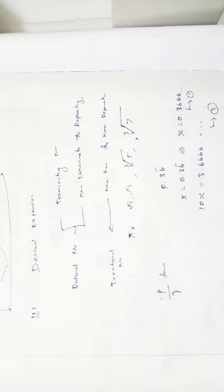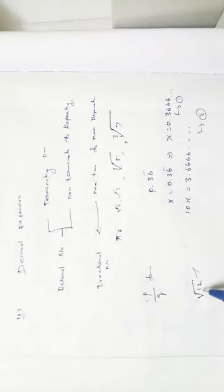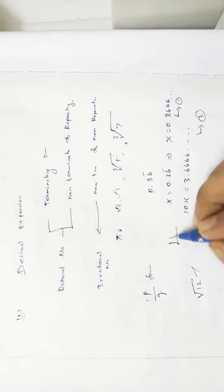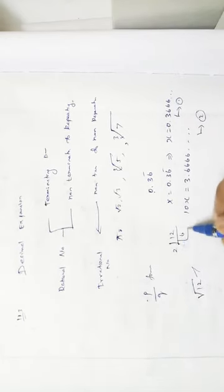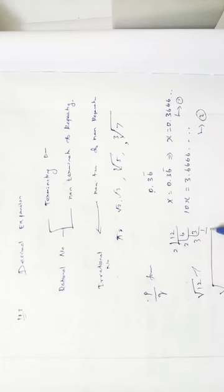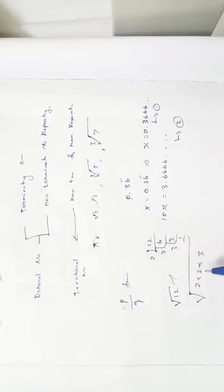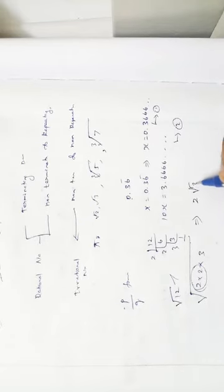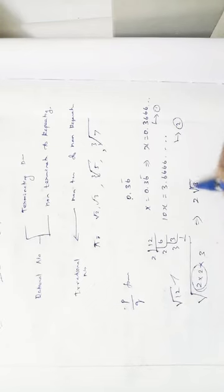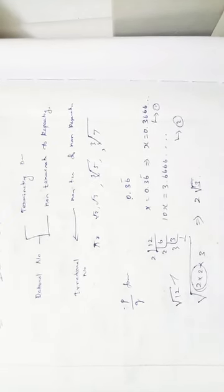We also classify whether numbers are rational or irrational. For example, √12: doing prime factorization gives 2 × 2 × 3, so √12 = 2√3. Since there is still a root value, √12 is irrational. But √16: prime factorization gives 2 × 2 × 2 × 2, so √16 = 4. No root remains, so √16 is a rational number.